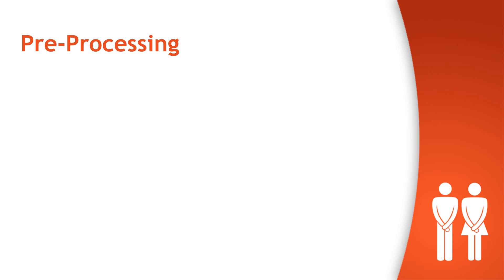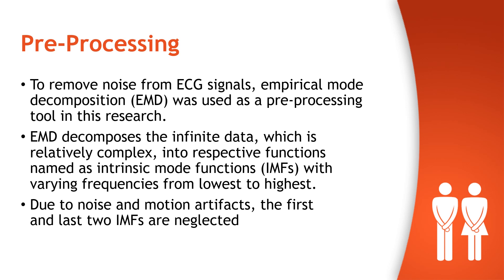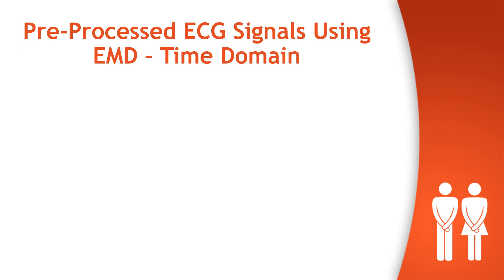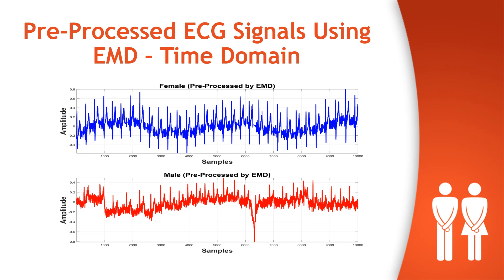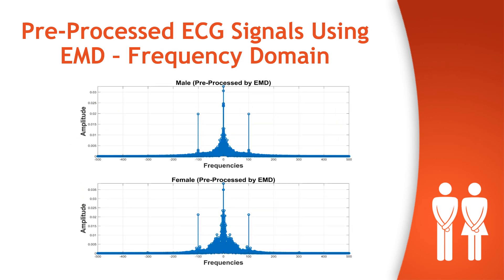Now we will talk about preprocessing. Raw ECG signals contain some noise, and in order to remove this noise, Empirical Mode Decomposition, also known as EMD, was used as a preprocessing tool. EMD decomposes complex data into intrinsic mode functions, or IMFs, with varying frequency from lowest to highest. Due to noise and motion artifacts, the first and last two IMFs are neglected. You can see the preprocessed ECG signal using EMD in the time domain, and in this particular slide, you can see the preprocessed ECG signal in the frequency domain.